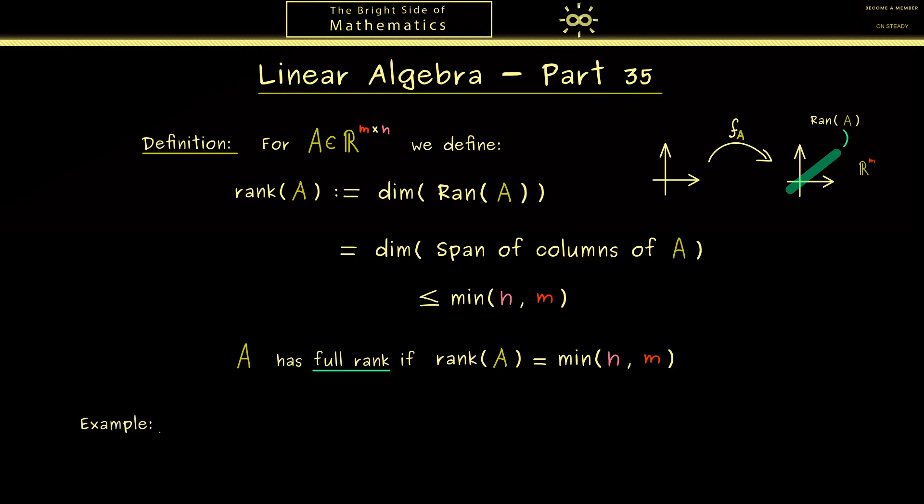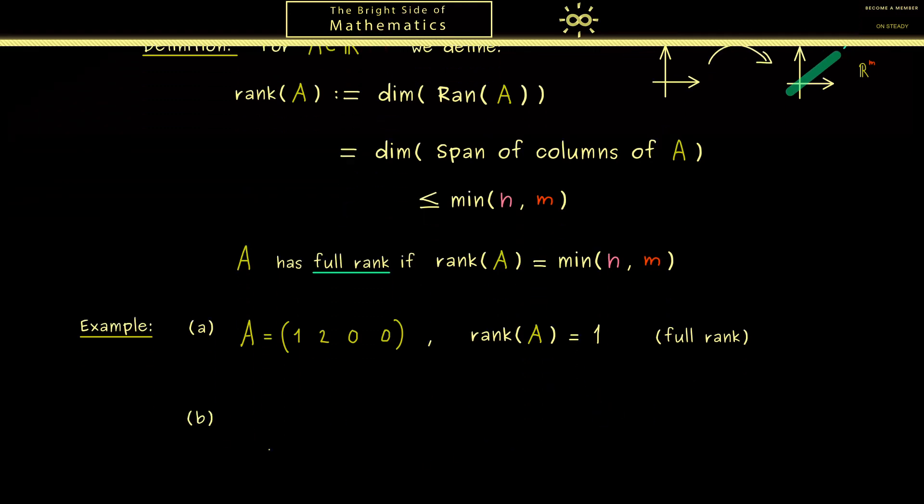Now, before we continue with more definitions, let's first look at some examples here. So let's start with a very simple example. This here is a matrix with just one row and we immediately see the rank is 1. Of course, the columns can only span a one-dimensional vector space here. Hence in this context, we can also state that this matrix has full rank. Okay, then maybe another example might be more interesting.